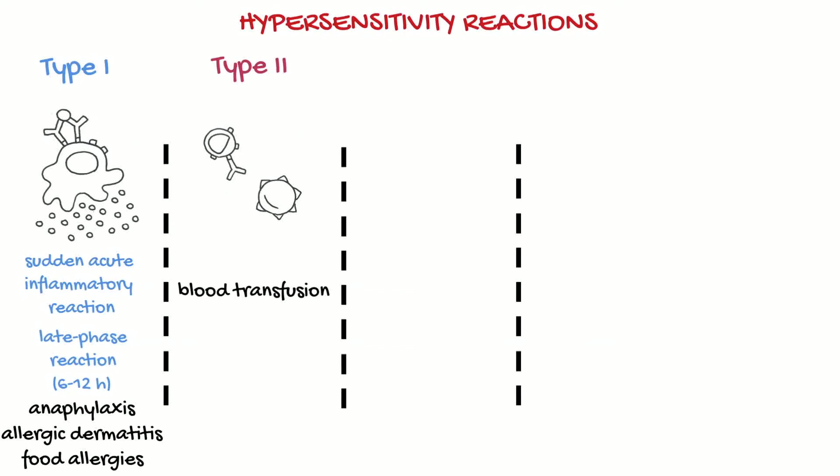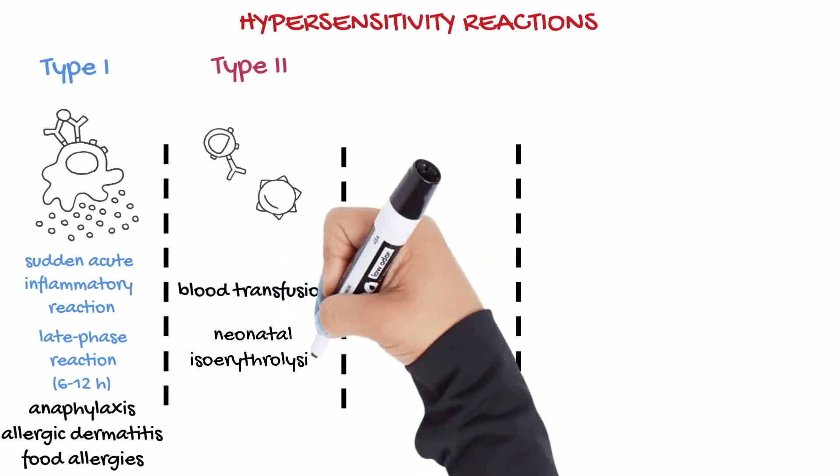A type of these reactions occurs also in foals born from mares that have become sensitized to foreign red cells. The dams have the antibodies against these red blood cells and they are concentrated in their colostrum. If the newborn foal has this type of red blood cells and suckles the colostrum, these antibodies will cause a rapid destruction of its red cells. This disease is called neonatal isoerythrolysis.